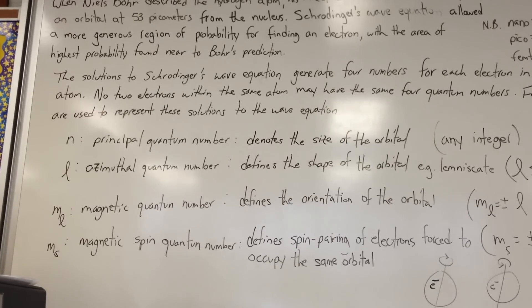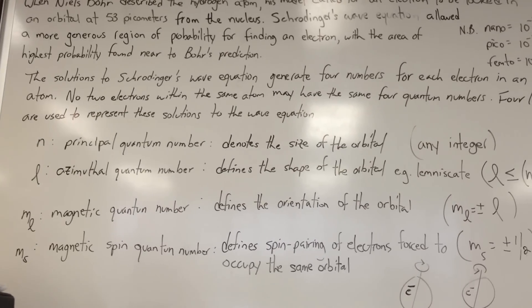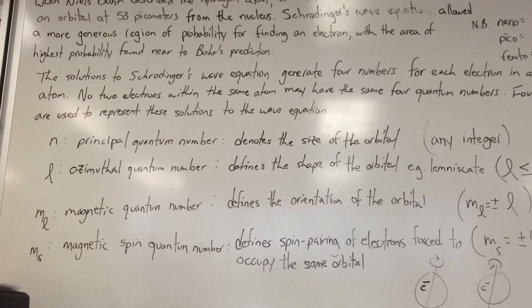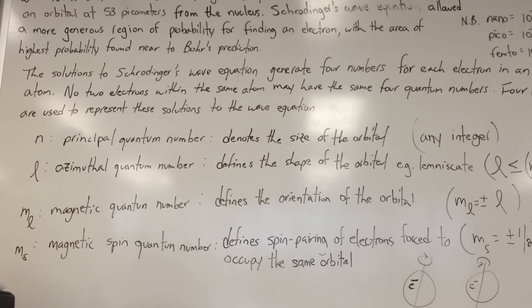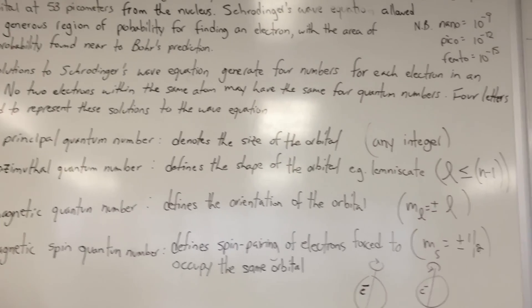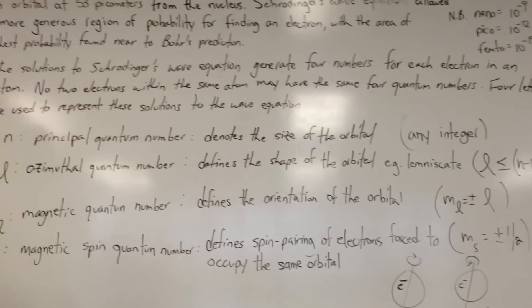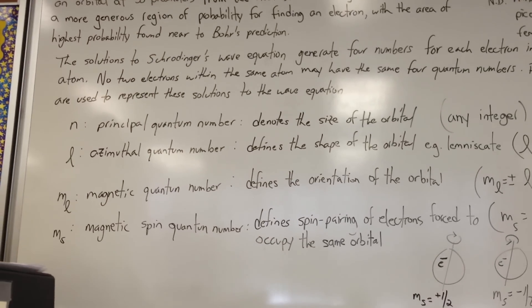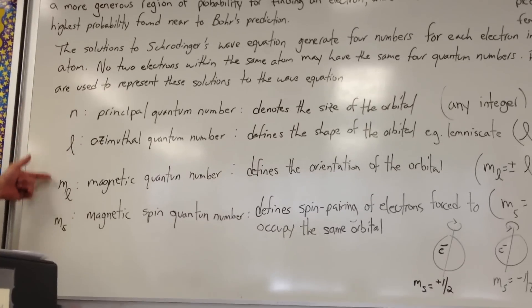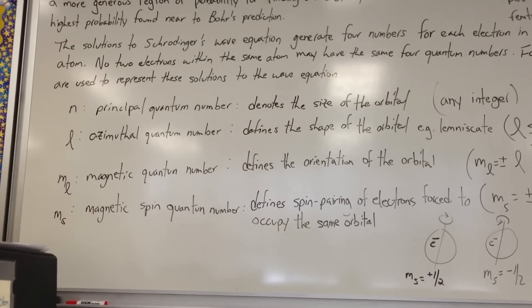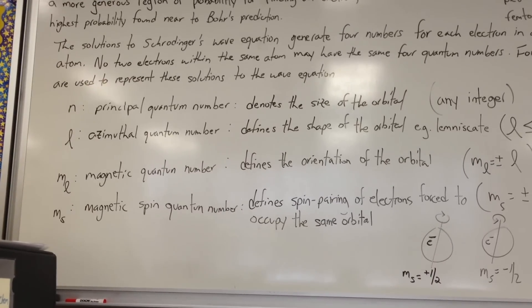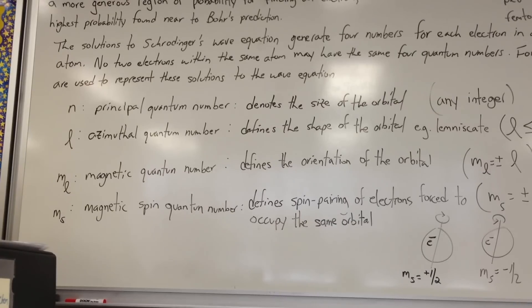The solutions to Schrödinger's wave equation generate four numbers for each electron in an atom, and no two electrons within the same atom may have the same four quantum numbers. Four letters are used to represent these solutions to the wave equation, and those four letters represent the four different numbers that are assigned to each electron in the atom.